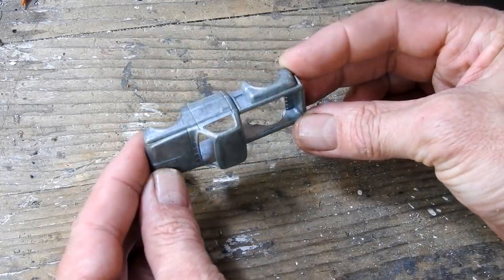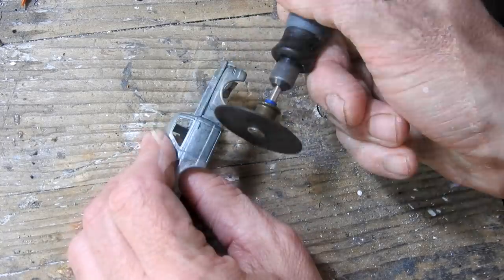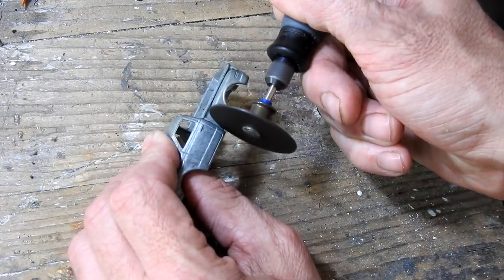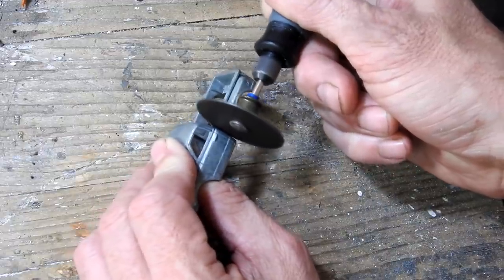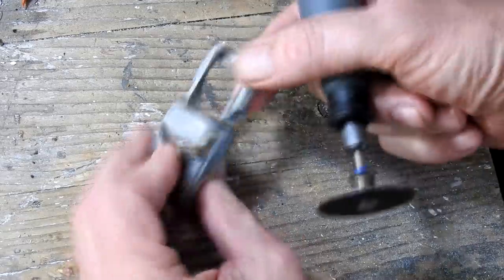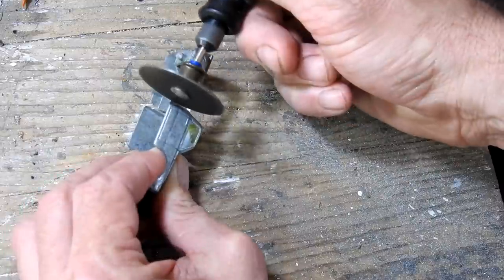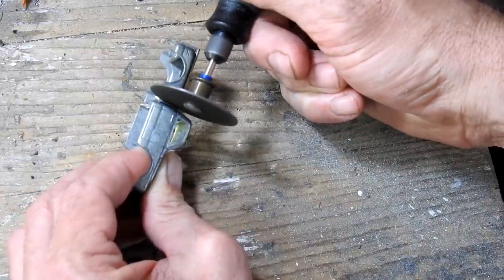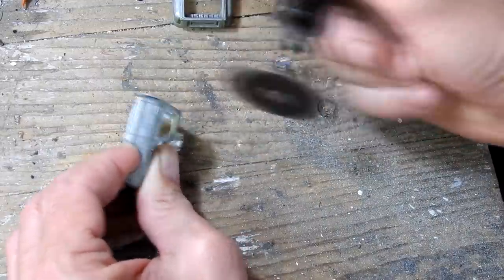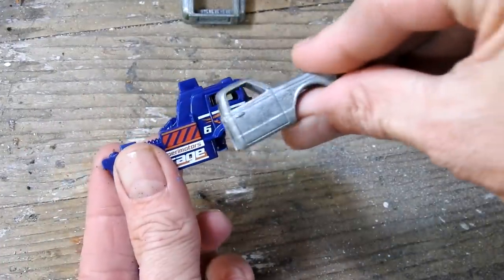Now that the paint's removed I'm gonna use a cutting wheel on my Dremel to remove the deck at the back. There we go.